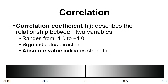When talking about correlations, we need to discuss the correlation coefficient, or R. This is a value that describes the relationship between two variables. R ranges between minus 1 and plus 1 — you can't have an R larger than plus 1 or more negative than minus 1. That's our upper and lower limit.